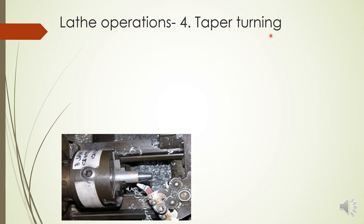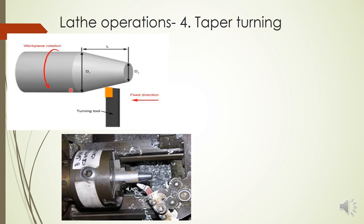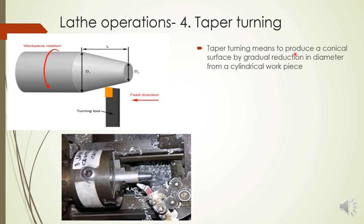Taper turning produces a conical surface where the diameter gradually reduces along the length — from diameter d1 at one section to a smaller d2 at the other end. Taper turning means producing a conical surface by a gradual reduction in diameter from a cylindrical workpiece.